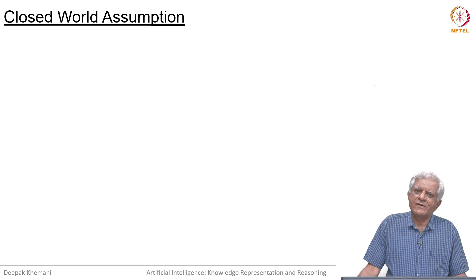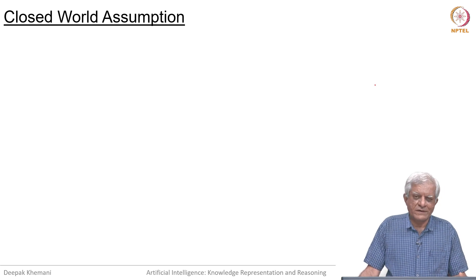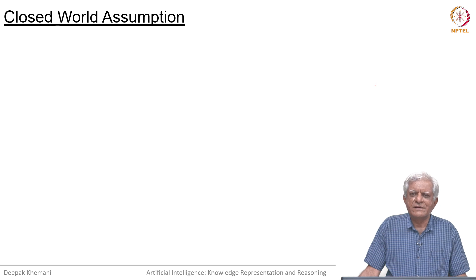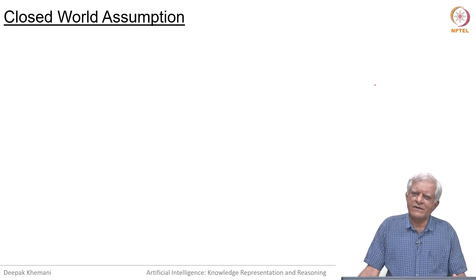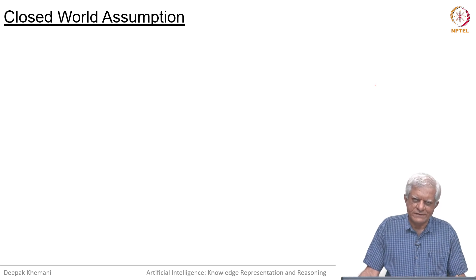Welcome back. We have started looking at default reasoning, and as we said, default reasoning is a mechanism we want to deploy in a world where there is a fair amount of uncertainty — where you do not have complete knowledge and yet you want to make inferences essentially.